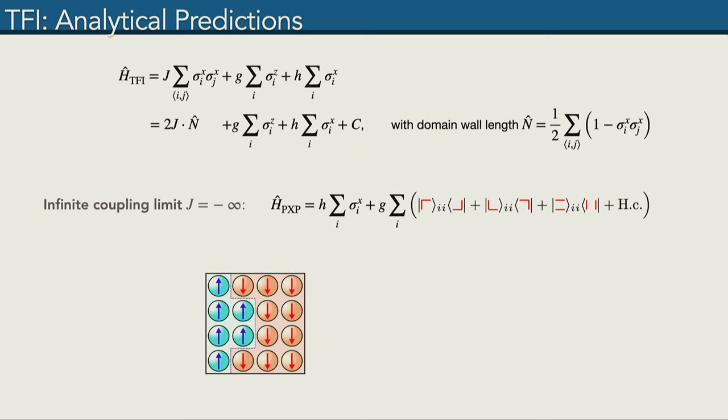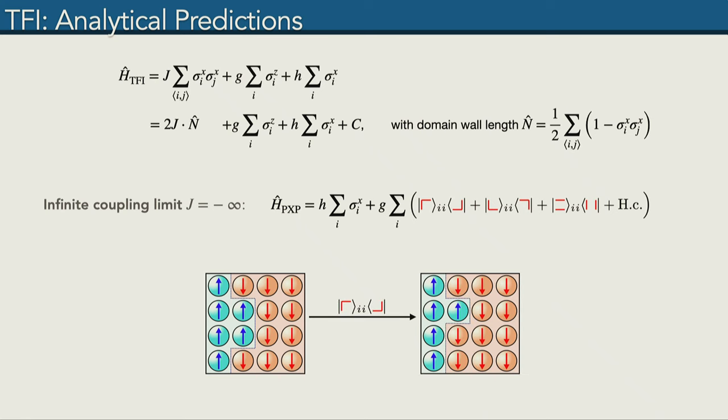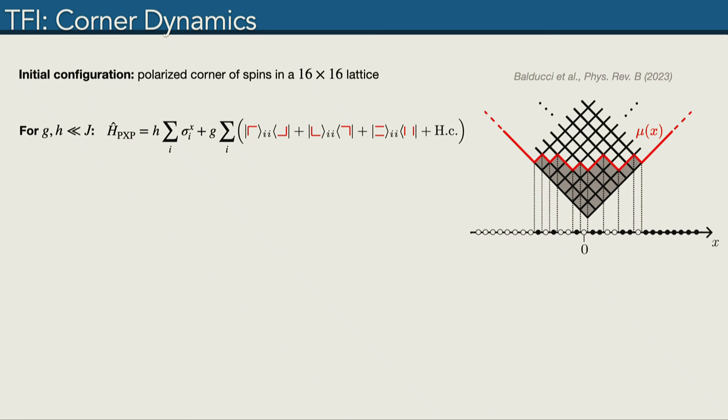In a certain limit, namely where the coupling is infinite, this transverse field Ising Hamiltonian can be reduced to the so-called PXP Hamiltonian. You may be familiar with it from quantum many-body scars. The idea here is that we only allow those transitions in the Hamiltonian which do not change the length of the domain wall. The longitudinal field term survives, but for this transverse field term which flips spins, we take only those that do not change the length of the domain wall. As an illustrative example, if we look at this spin here, it has two neighbors aligned in the same direction and two in the opposite one. It has locally a domain wall length of 2, but if we flip it, the orientation of the domain wall changes, but the length does not.